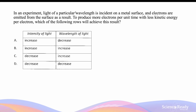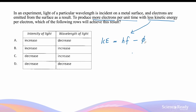In an experiment, light of a particular wavelength is incident on the metal surface and electrons are emitted as a result. To produce more electrons per unit time with less kinetic energy per electron, we need to consider two things. The kinetic energy of a photoelectron depends on the photon's energy and the work function of the metal. Since the metal surface is unchanged, the work function is fixed, and we can only alter the kinetic energy by changing the frequency.